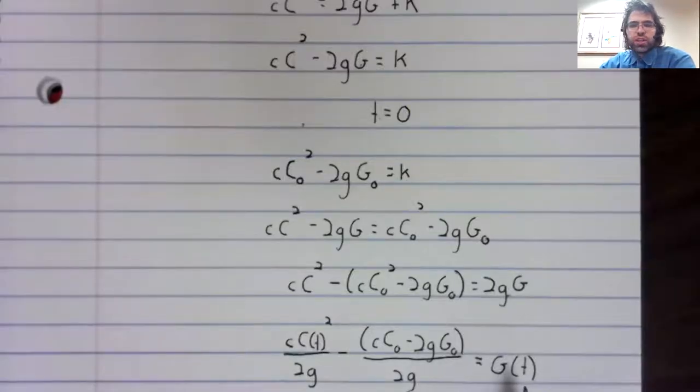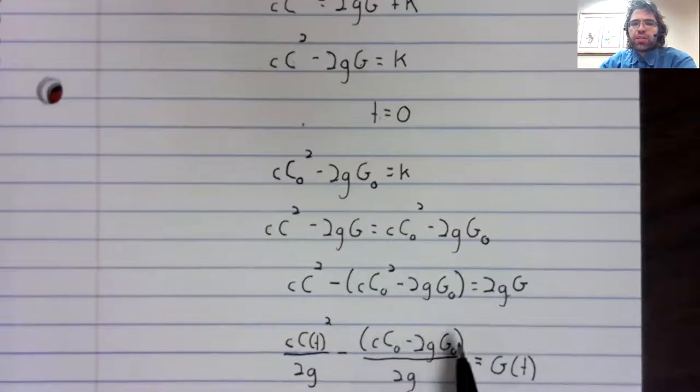Here's G in terms of C and our various constants. And now we'll state which side is going to win this conflict. It's going to be the numerator of this fraction that determines that.